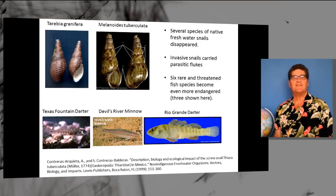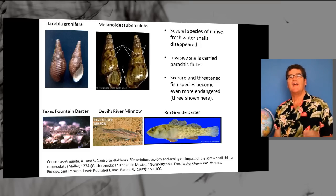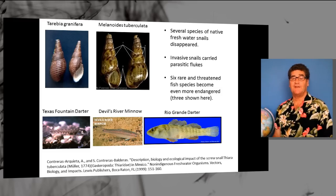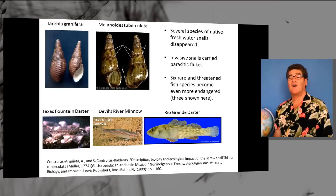These are three of the species, the Texas Fountain Darter, the Devil's River Minnow, and the River Grand Darter. So we've traded two incoming invasive species for several of our native species that are on the way out. That's not a fair trade.